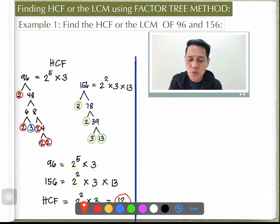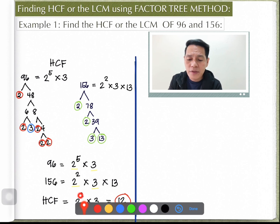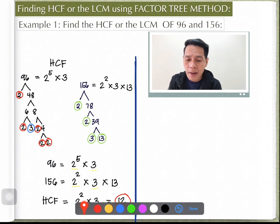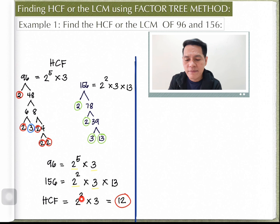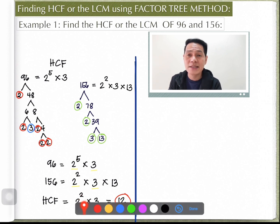Bringing down 2 to the power of 2 as the common factor. Both numbers also share the factor 3 with the same power of 1, so we copy one 3. Therefore, the HCF is 2 squared times 3, which is 4 times 3, equal to 12. So 12 is the highest common factor.